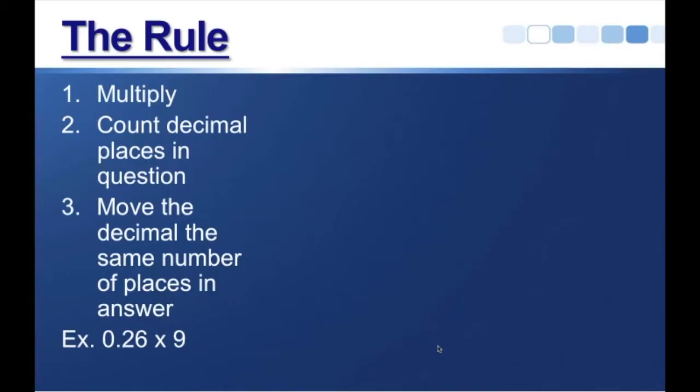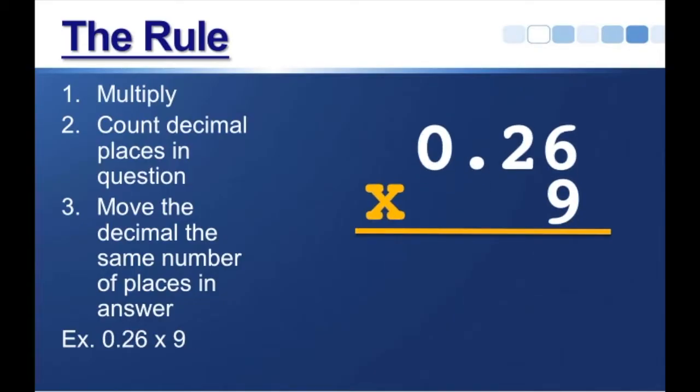Another example, 0.26 times 9. Well, the same exact procedure. We'll start with multiplying. 9 times 6 is 54, bring down the 4, carry the 5. 9 times 2 is 18, 18 plus 5 is going to be 23, bring down the 3, carry the 2. 9 times 0 is 0, and we add 2 to 0, and that gives us 2.